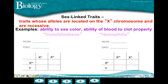This leads us to what is known as sex-linked traits. These are traits whose alleles are located on the X chromosome and are recessive. For example, the ability to see color — or what we know as color blindness — is a recessive trait found on the X chromosome. The ability of blood to clot properly, known as hemophilia, is also a sex-linked recessive trait.